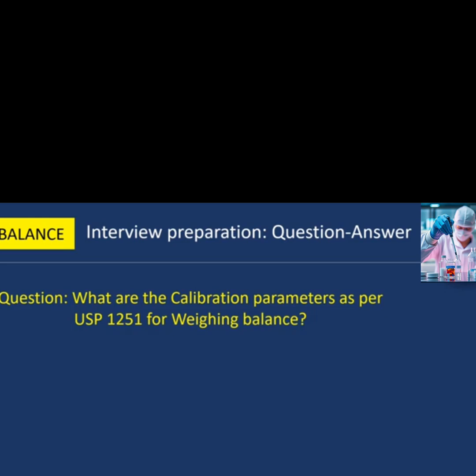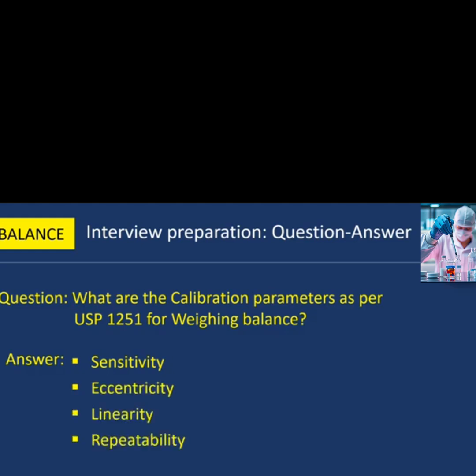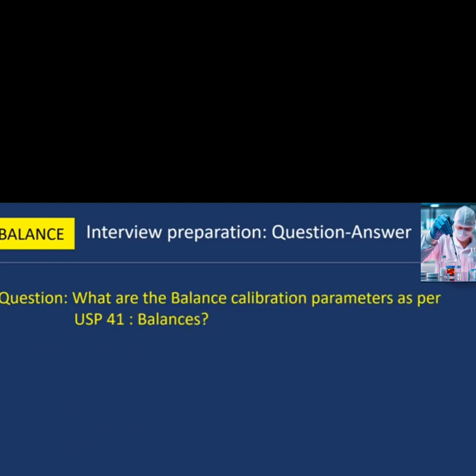Next question: what are the calibration parameters as per USP 1251 for weighing balance? The calibration parameters as per USP 1251 are: first, sensitivity; second, eccentricity; third, linearity; fourth, repeatability.